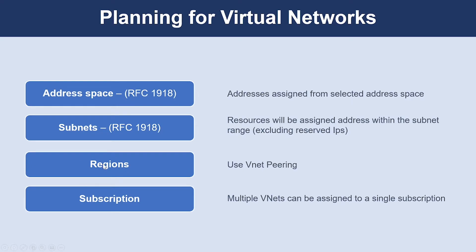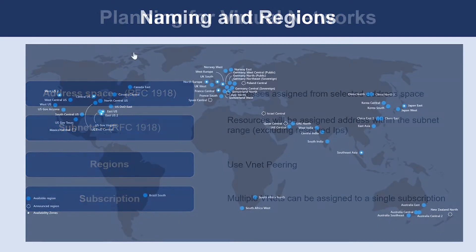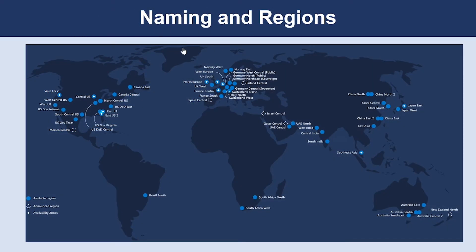VNets are scoped to a single region or location; however, multiple virtual networks from different regions can be connected using virtual network peering. VNets are also scoped to a subscription, so you can implement multiple virtual networks within each Azure subscription and Azure region.